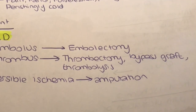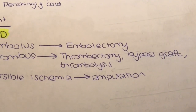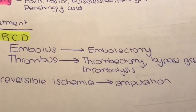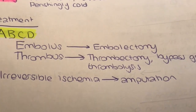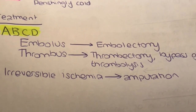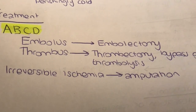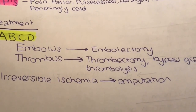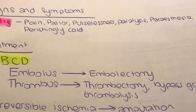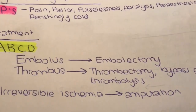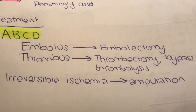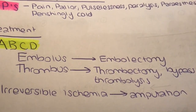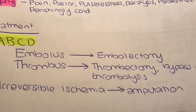For a thrombus there are a few treatment options: thrombectomy, bypass graft, and thrombolysis if the ischemia isn't as severe and the limb will survive for at least 12 hours. In some cases the ischemia is irreversible and an amputation will be required.